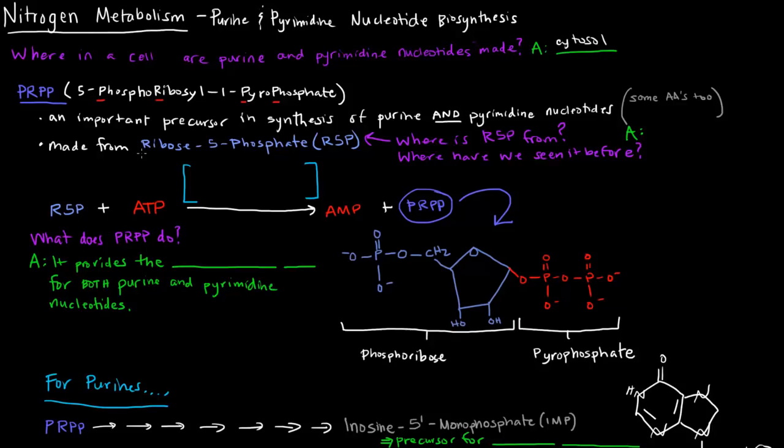PRPP is made from ribose-5-phosphate, and that should be familiar. Where is this ribose-5-phosphate from? In a previous video, if you recall, we talked about it being one of the products of the pentose phosphate pathway. And we mentioned that the ribose-5-phosphate was important in nucleotide synthesis, and so here we're talking about exactly how that's happening.